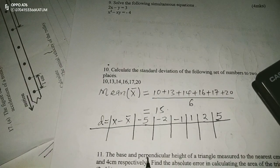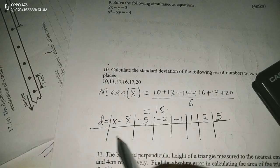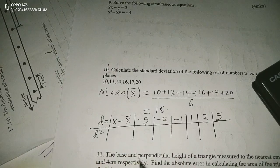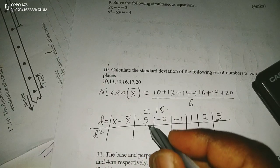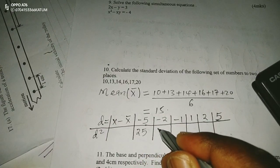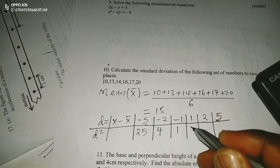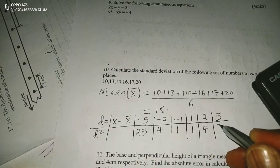Therefore, those are the deviations of every number from the mean. Then now I should get the deviations squared. All the deviations squared. Negative 5 squared will be 25. Negative 2 squared will be 4. Negative 1 squared will be 1. 1 squared, 1. This will give us 4. This will give us 25.